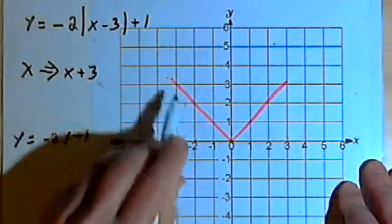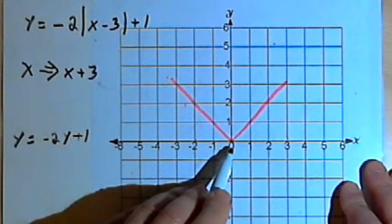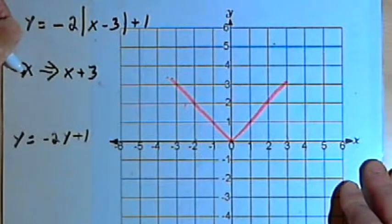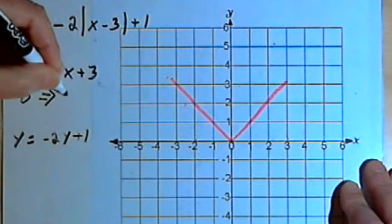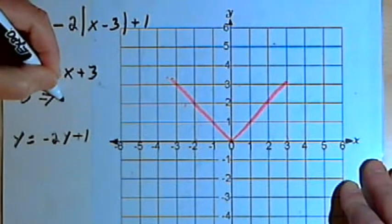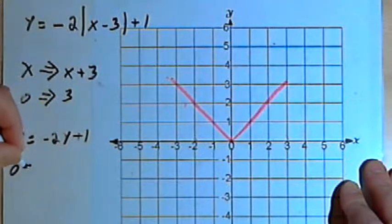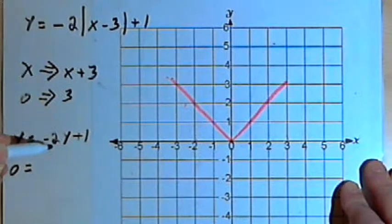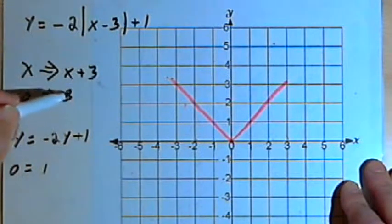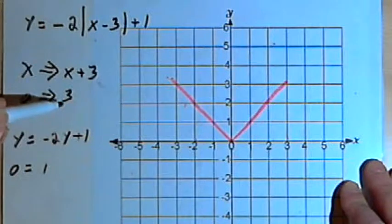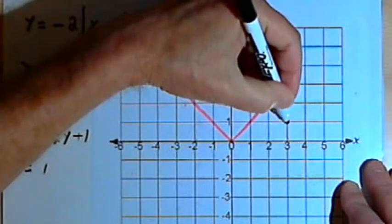So let's try that with some coordinates on the original or parent function. Let's take the point 0, 0. The x-coordinate is 0, so I take that and add 3 to get 3. The y-coordinate is 0, so I multiply it by negative 2, which is still 0, and add 1 to get 1. So I'm going to have a new point on my transformed graph at 3, 1.